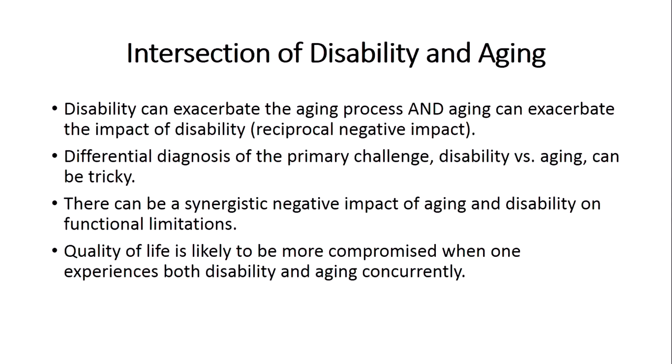Now, the intersection of disability and aging. Disability can exacerbate or make worse the aging process, and aging can make worse the impact of disability. Both have what we call a reciprocal negative impact. Differential diagnosis — determining which is causing the negative impact — can be tricky and in many cases not that important, because disability and aging together produce a synergistic, not just additive, but geometric negative impact on functioning. Quality of life is likely to be more compromised when one experiences both disability and aging concurrently.